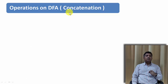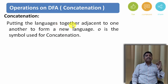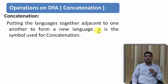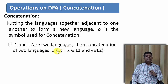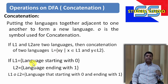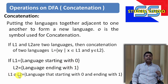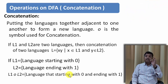Let us now understand one more operation called concatenation. Concatenation is nothing but putting the languages adjacent to one another. We use the symbol 'o' to indicate concatenation. If L1 and L2 are two languages and L is the result, then L consists of strings of the form xy, where x is a string from L1 and y is a string from L2. For example, if L1 starts with 0 and L2 ends with 1, then L1 concatenated with L2 gives strings starting with 0 followed by strings ending with 1.